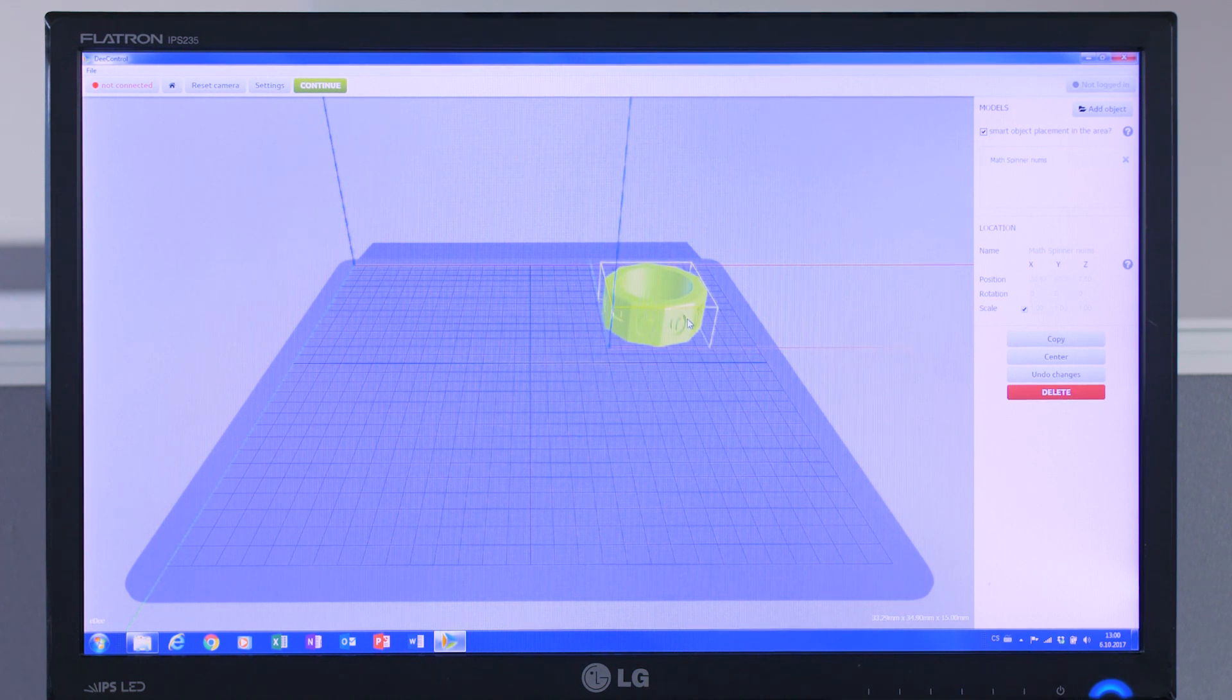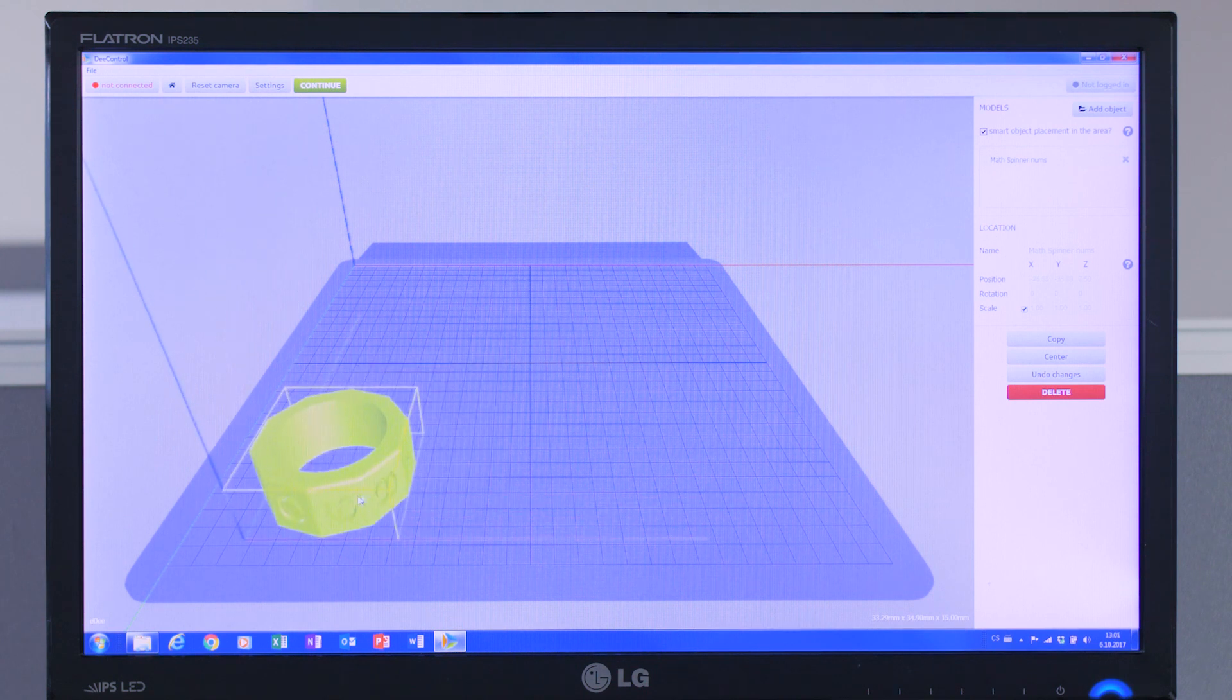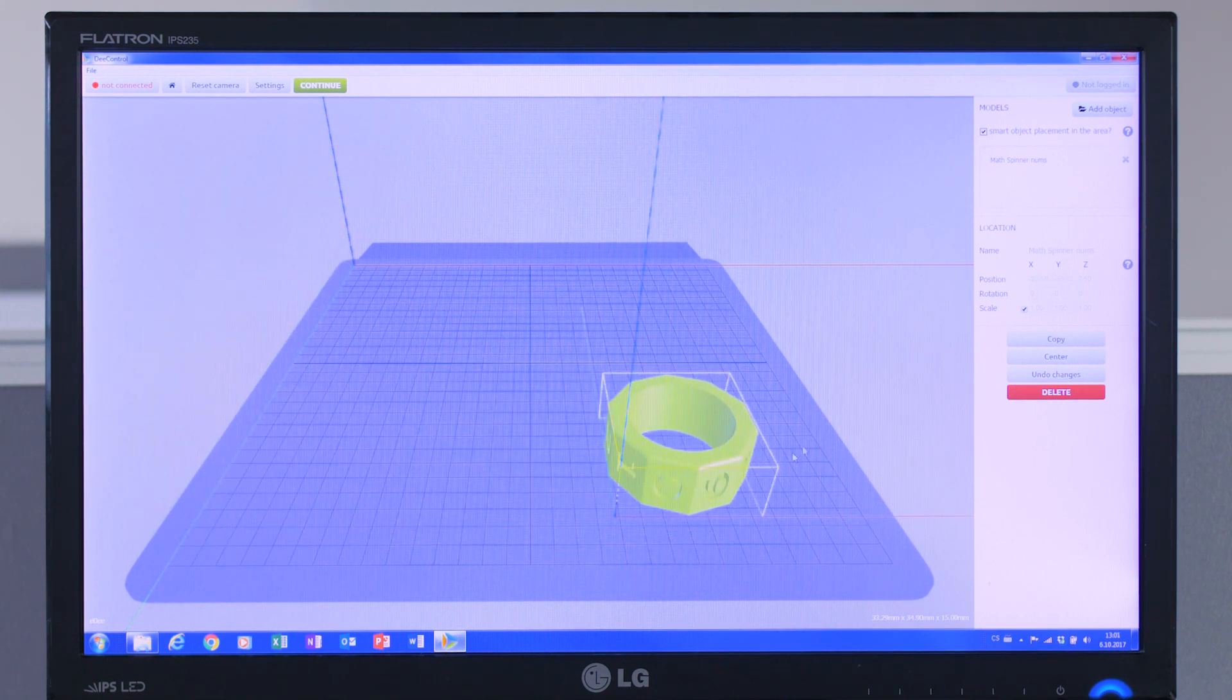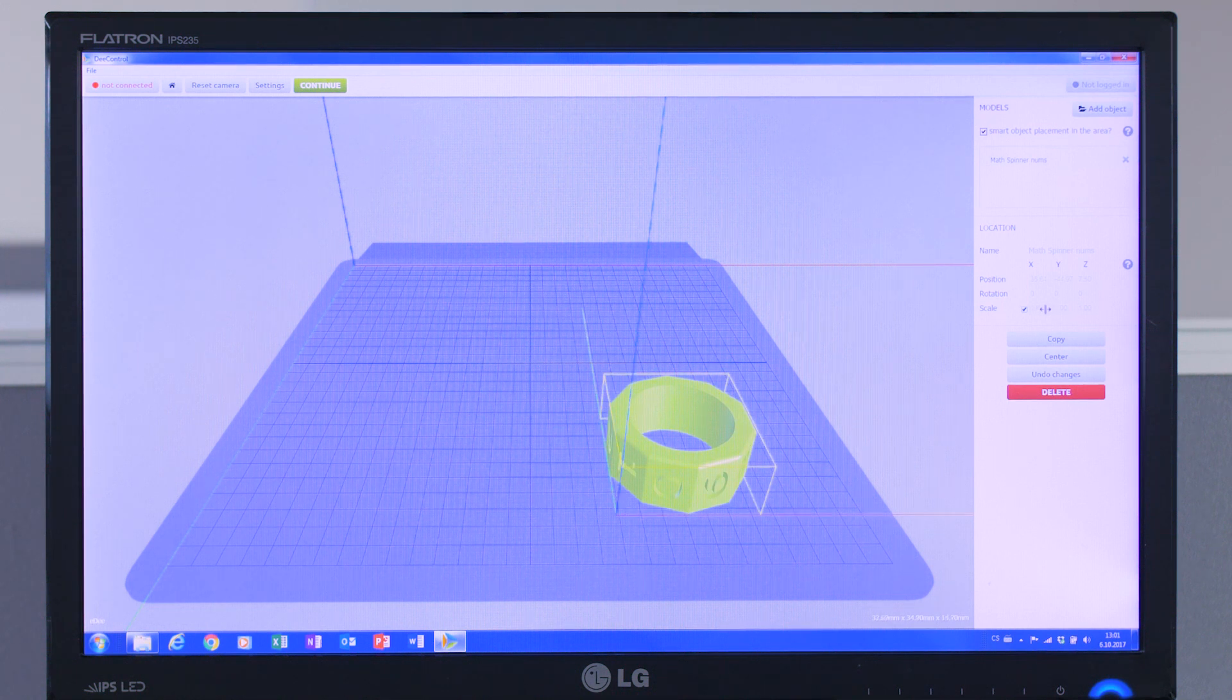You'll notice that the D-Control displays the object relative to the size of ED's print area, called the print bed. This way, I can see where to position the object and can make the model bigger or smaller as needed.